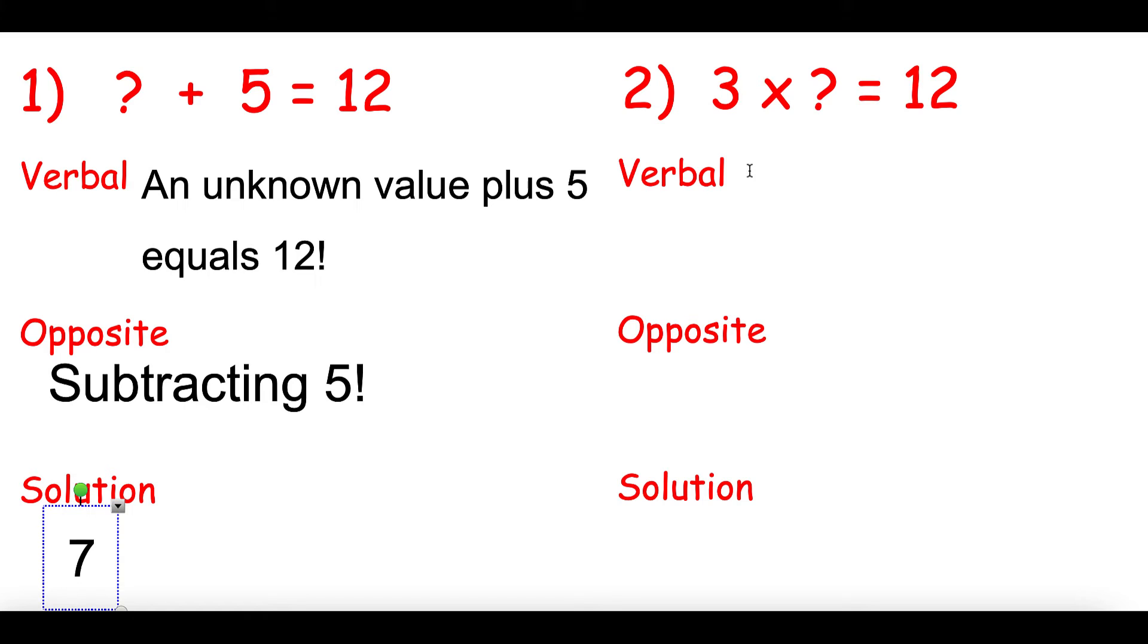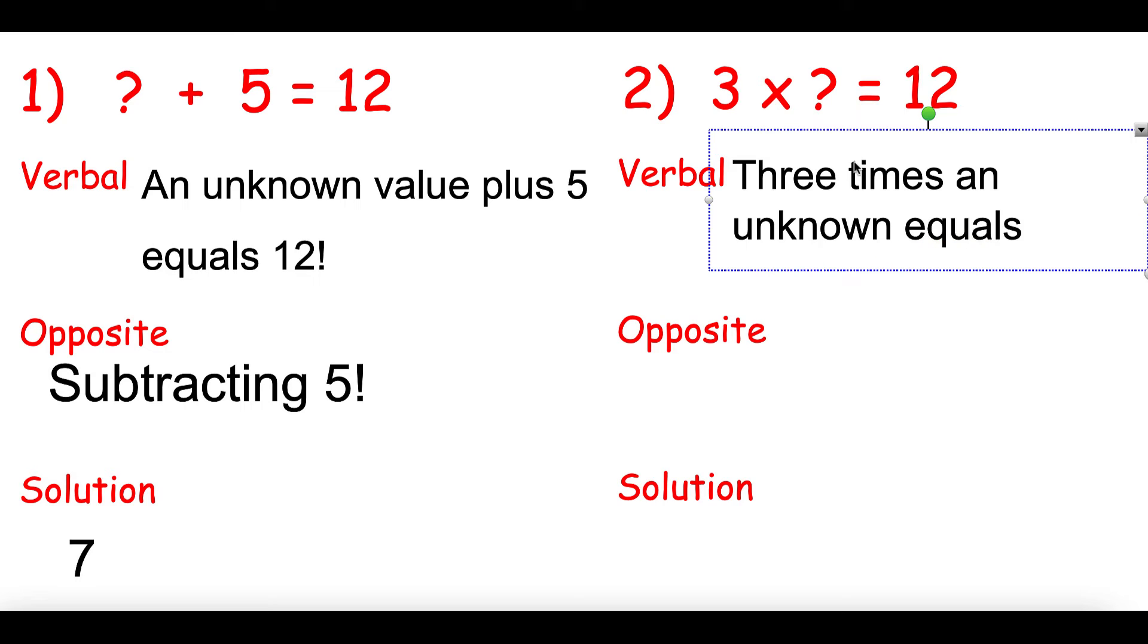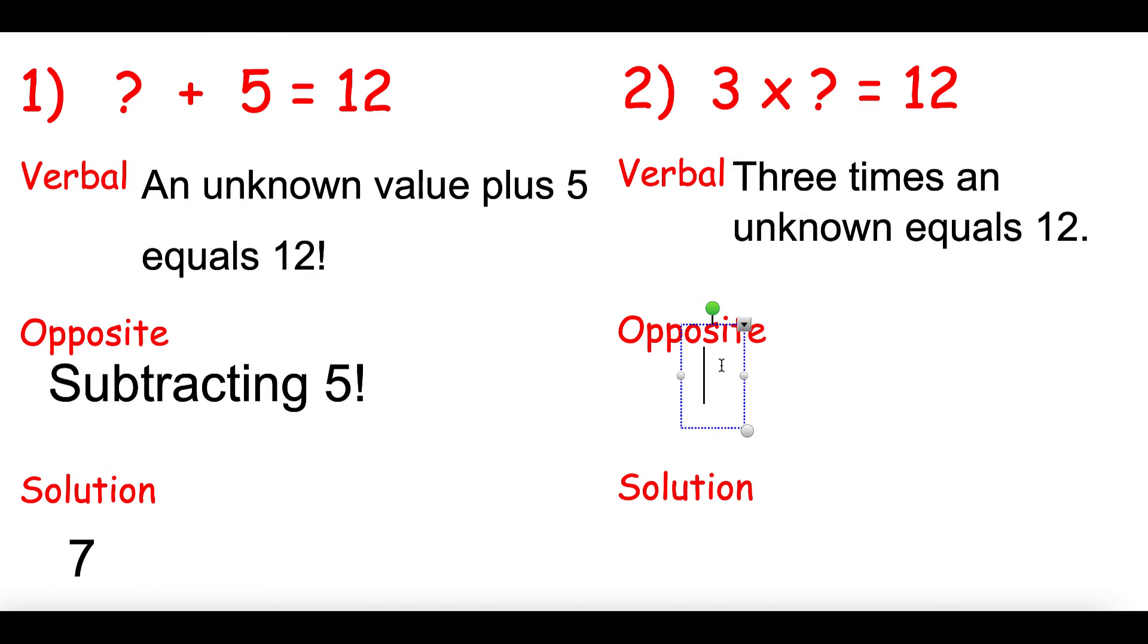Let's try another one. Verbally, we have this situation. We have three times what number equals twelve? So three times an unknown. I know I'm using that word unknown, and we could call it a variable. Three times an unknown equals twelve. I don't want you to call it question mark. I don't want you to be like, three times question mark equals twelve. Three times an unknown value equals twelve. So what's the opposite of times or multiplying? The opposite of times or multiplying would be dividing by three.